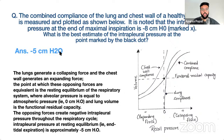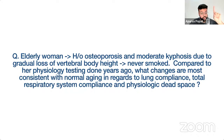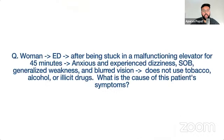An elderly woman with osteoporosis and moderate kyphosis, a non-smoker, is tested for normal aging changes. Lung compliance increases with aging (loss of elastic tissue). Chest wall compliance decreases (becomes stiffer). Physiological dead space increases. Total respiratory compliance decreases because the chest wall stiffening dominates.